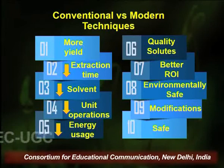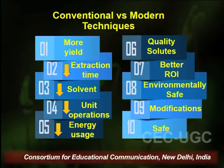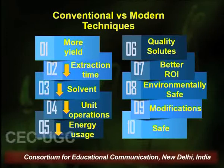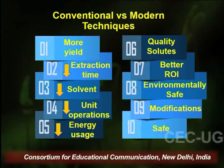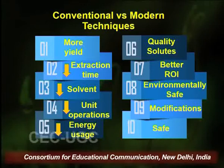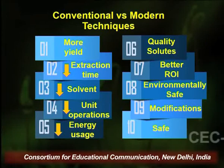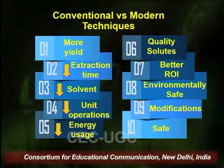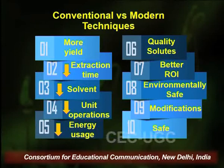Coming on to the brief comparison between conventional and modern techniques: modern techniques give you more yield in terms of the amount of extract obtained as well as the amount of the desired component extracted. They decrease the overall time of extraction — conventional techniques usually take days or few hours to complete the extraction process, whereas modern techniques complete extraction within few minutes. Modern techniques also exhibit a substantial decrease in the volume of solvent used to extract the drug material.